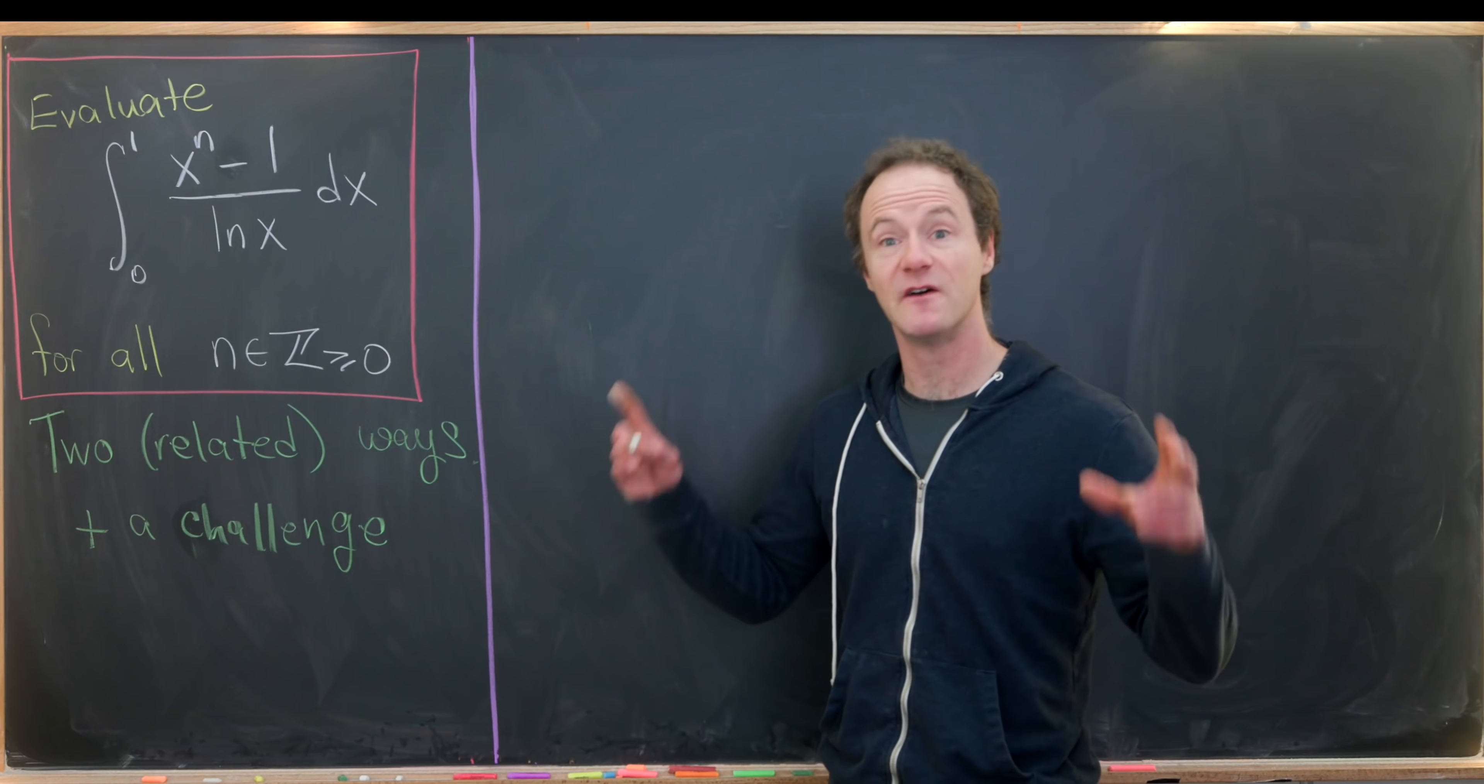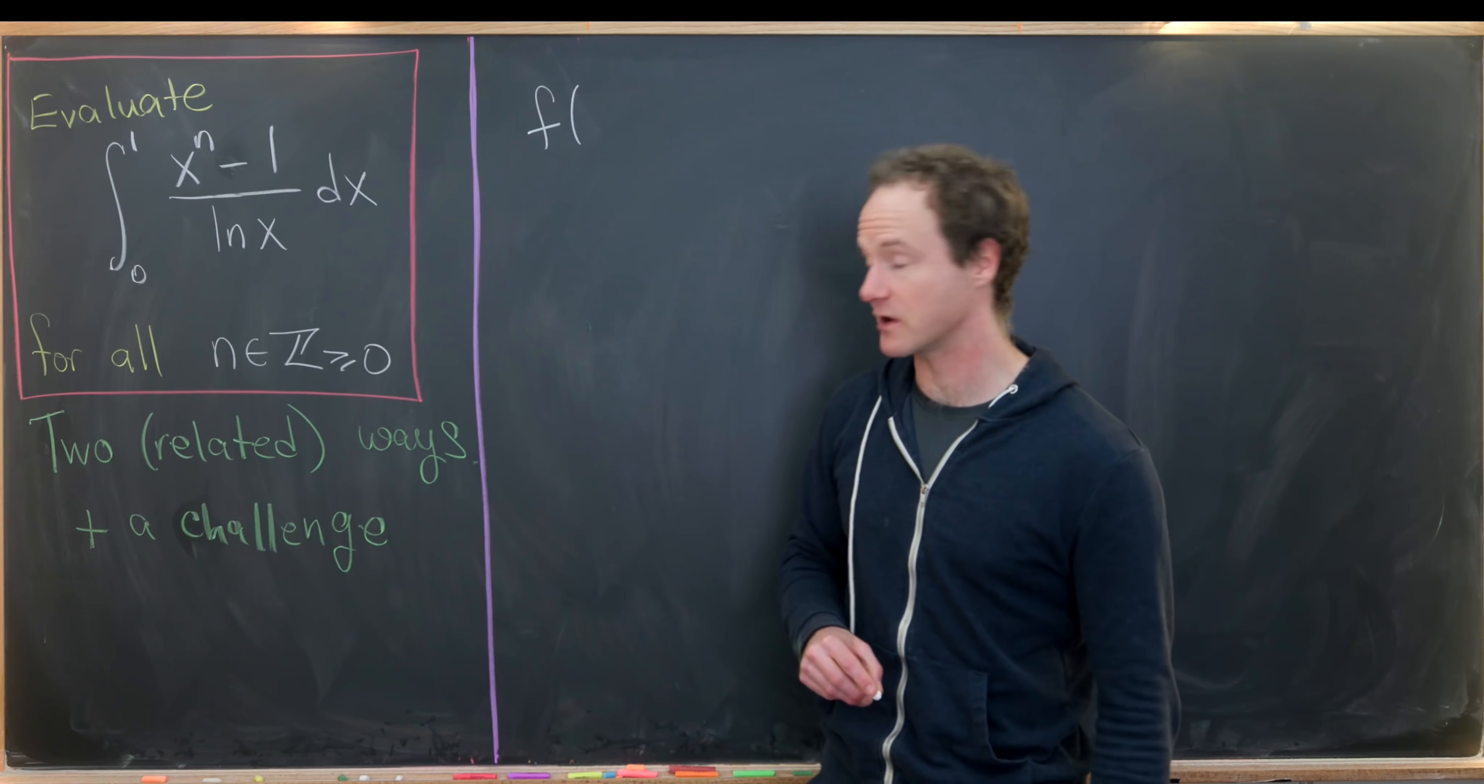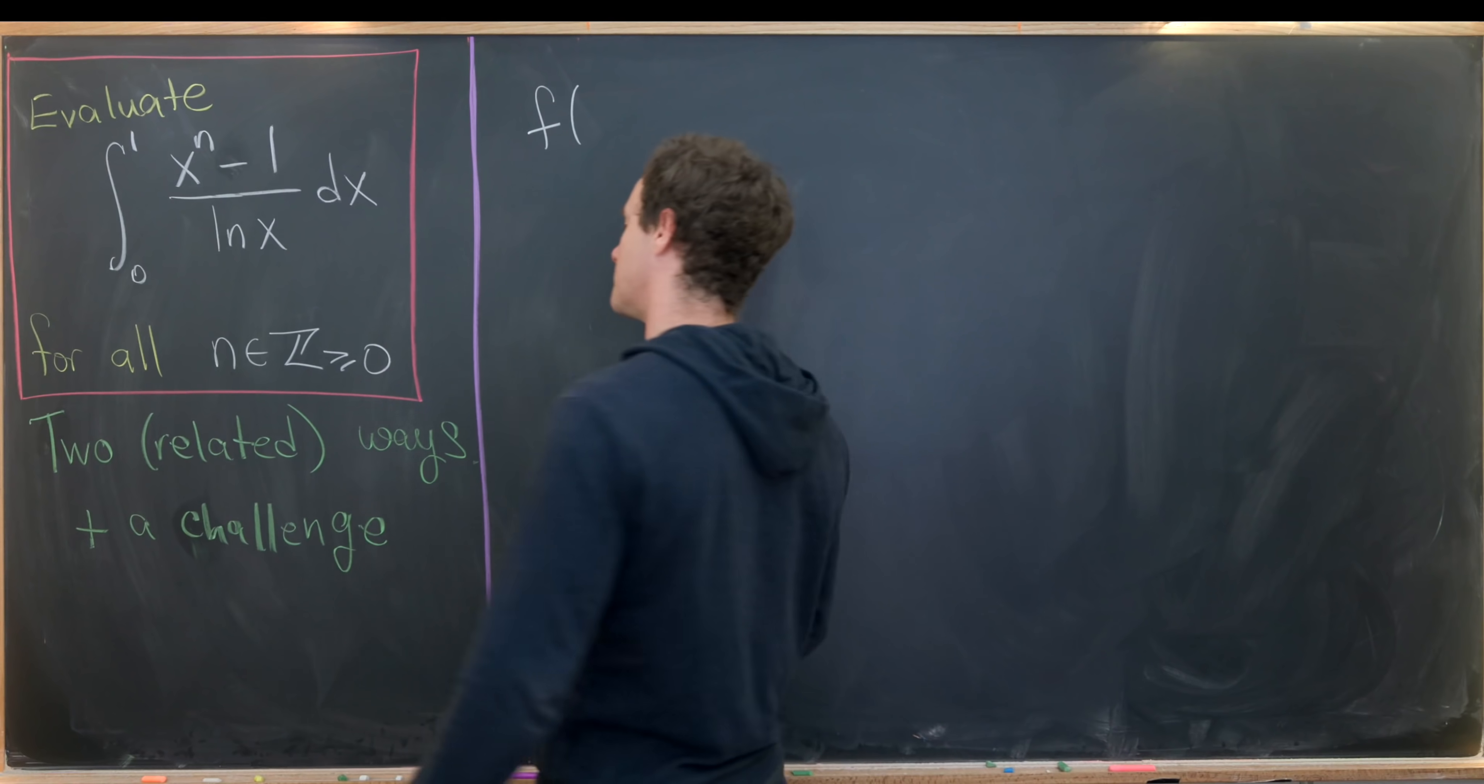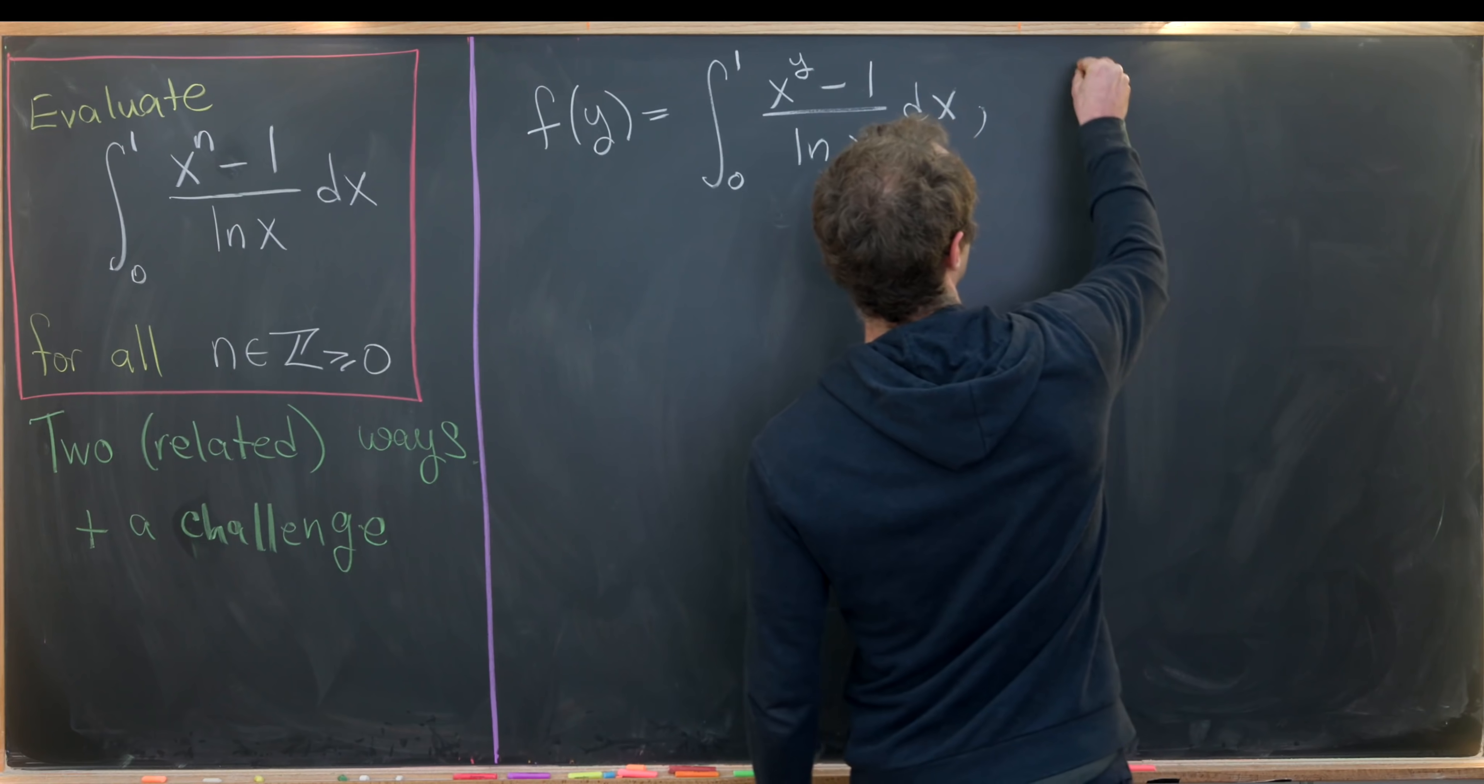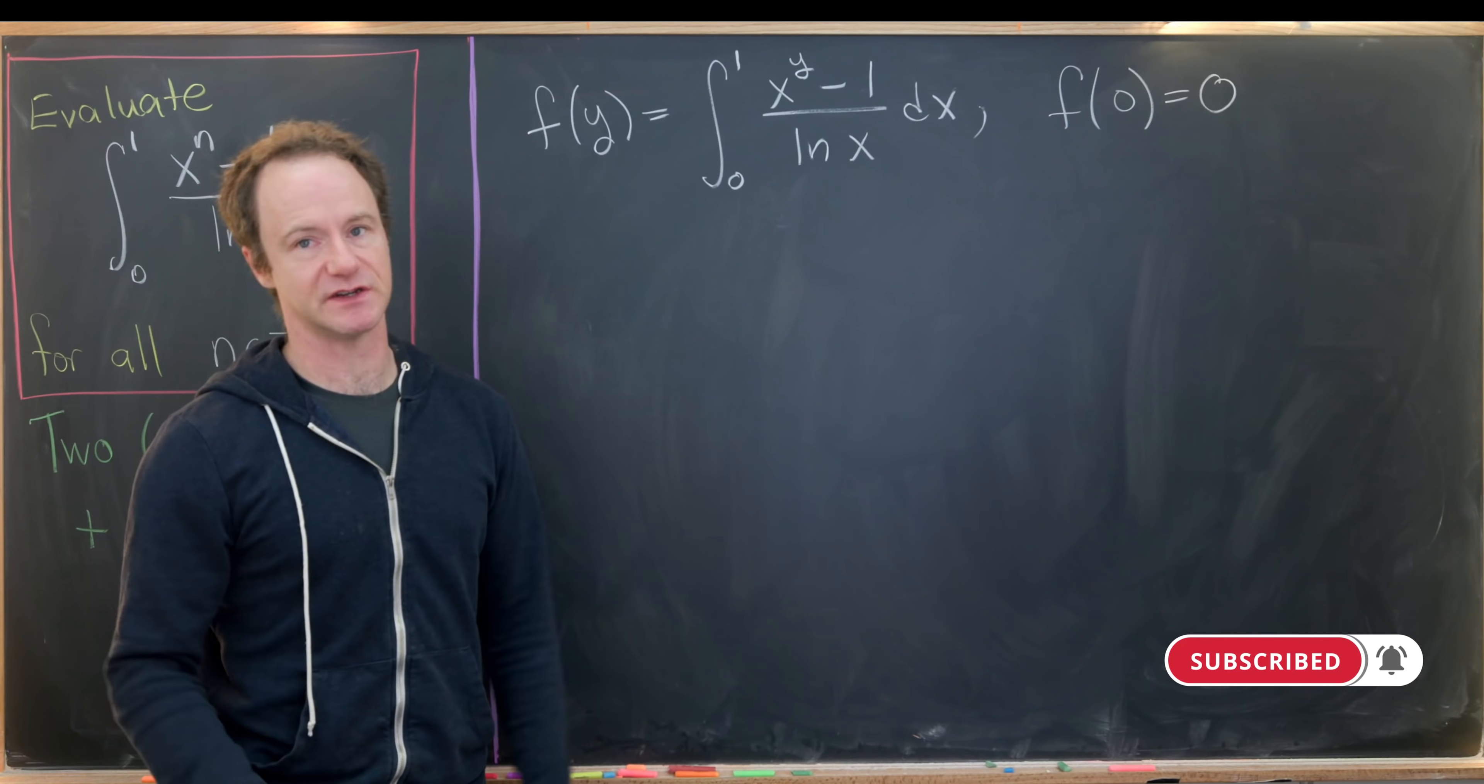Our first method will be using Feynman's differentiation under the integral sign technique. And so in order to do that, we need to define a function. That function should have a continuous variable instead of this n, which is a discrete parameter or discrete variable. We need a continuous variable here because we need to talk about taking the derivative. You can't quite do that with a discrete variable. So we'll define f of y to be equal to the integral from 0 to 1 of x to the y minus 1 over the natural log of x dx. And we'll start by noticing that f of 0 is very clearly equal to 0. That's because the integrand collapses just to 0.